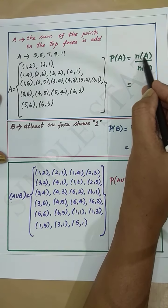Therefore, probability of A equals n(A) divided by n(S). n(A) is 18 and n(S) is 36, so probability of A is 18/36 = 1/2.